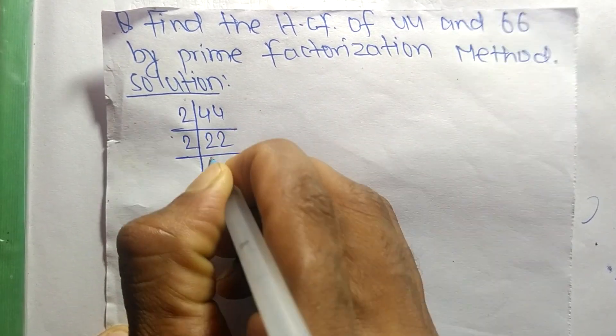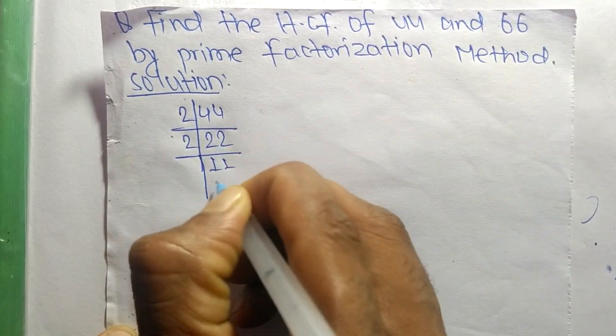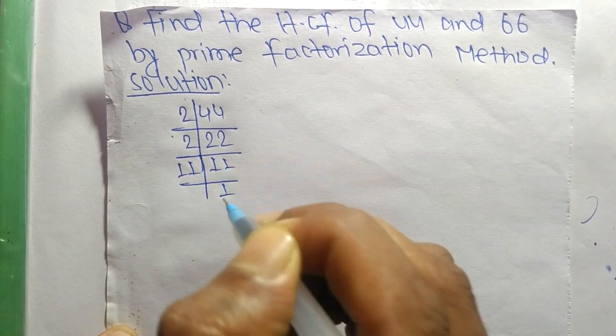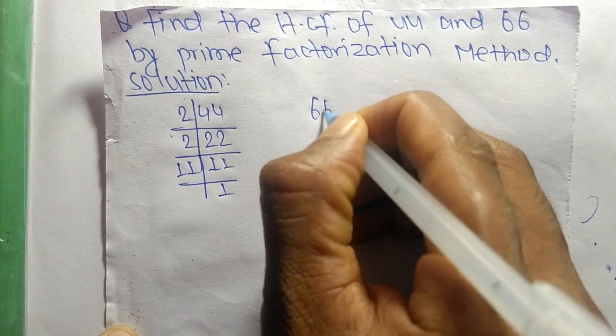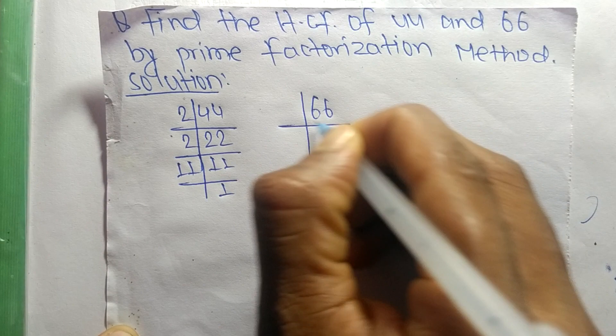2 times 11 equals 22, and 11 times 1 equals 11. Now, the prime factors of 66 are...